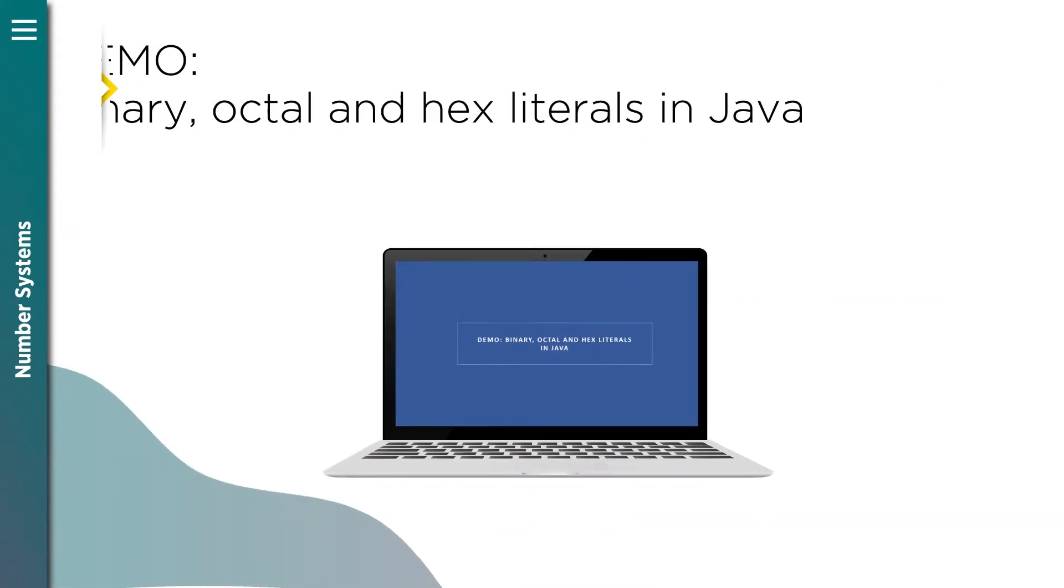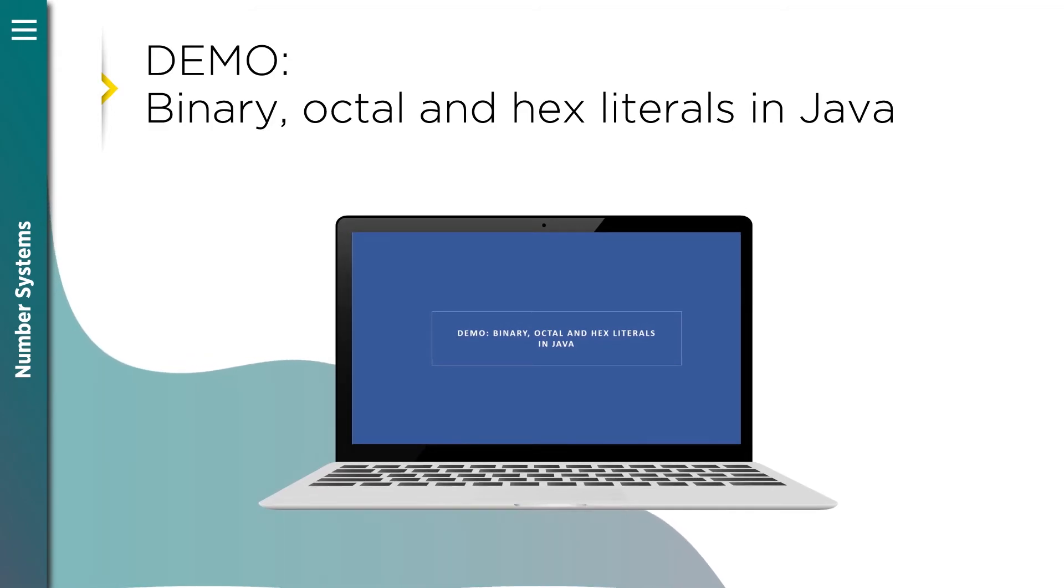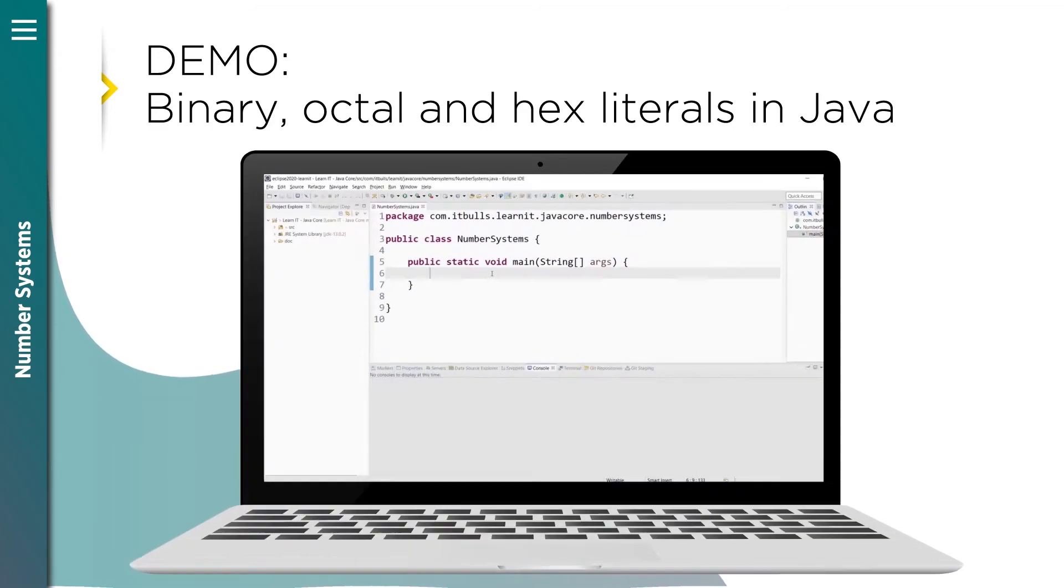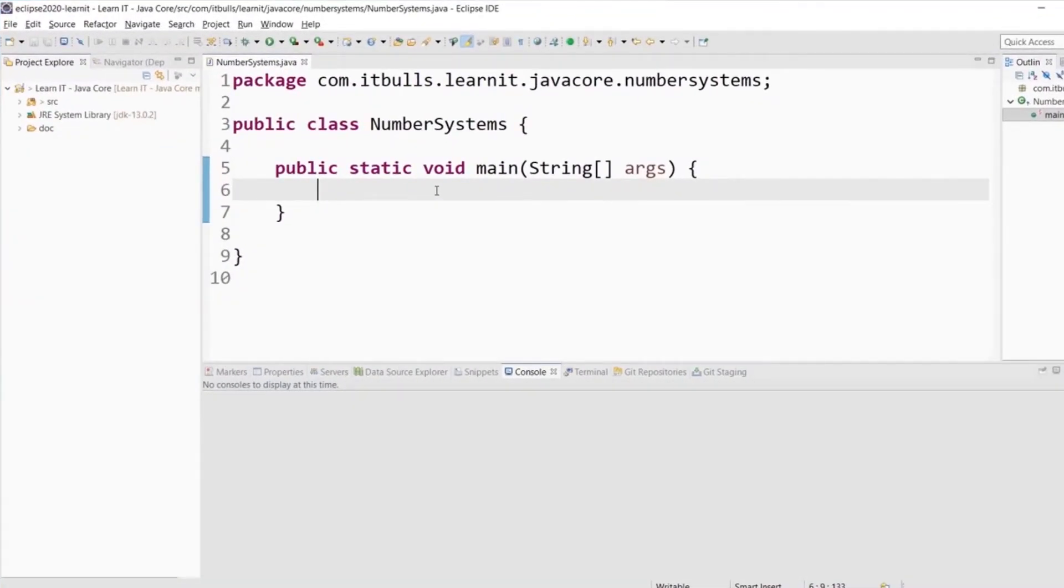Now let's have a look at how we can write binary, octal, and hexadecimal literals in Java. Everything is easy here. Binary, octal, and hexadecimal integer literals have different prefixes.